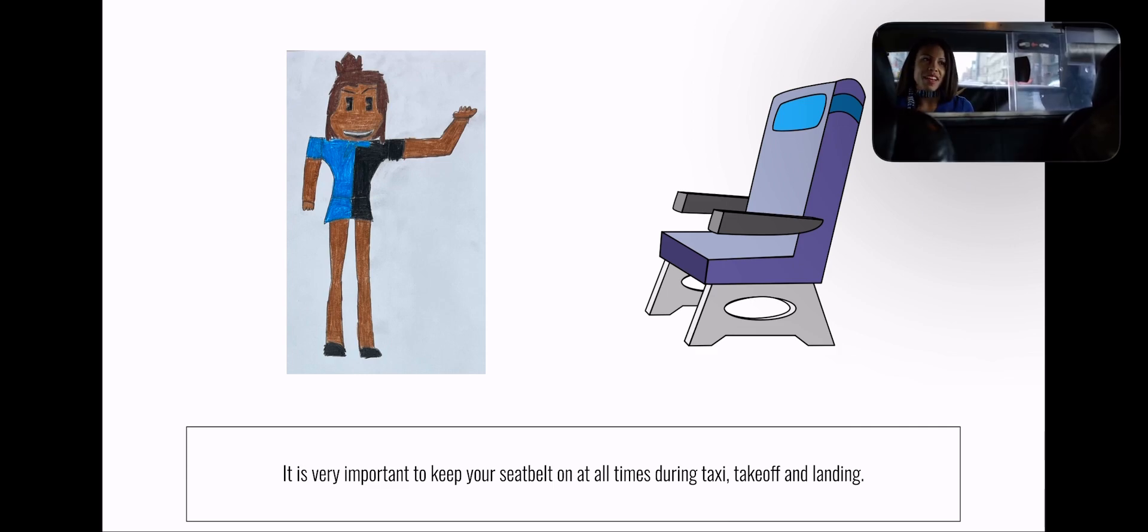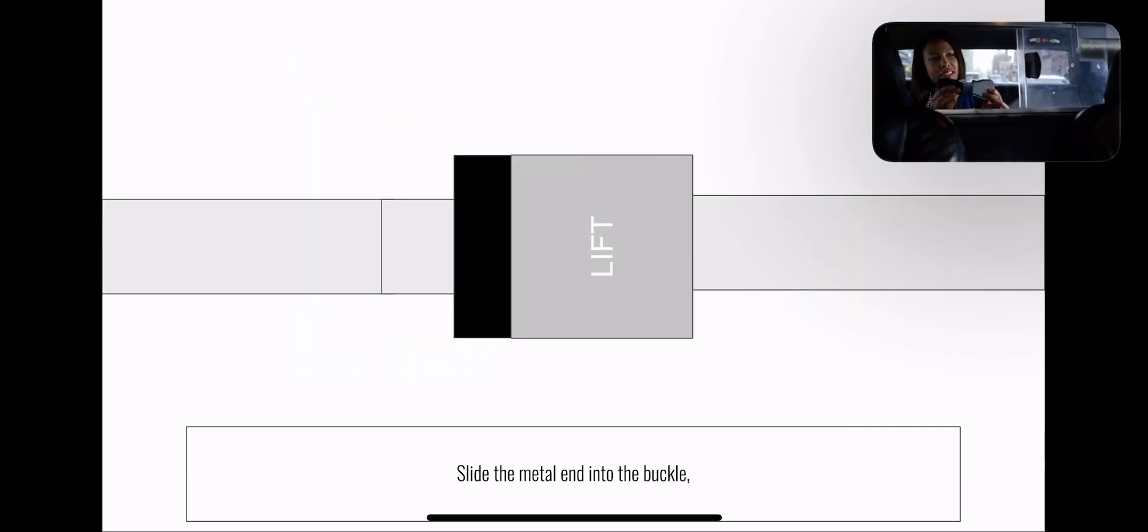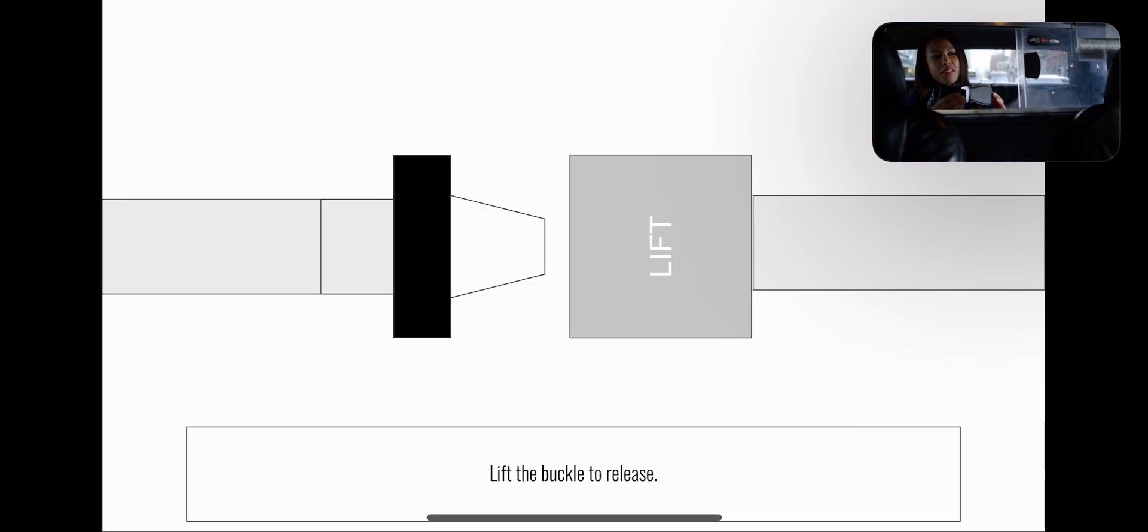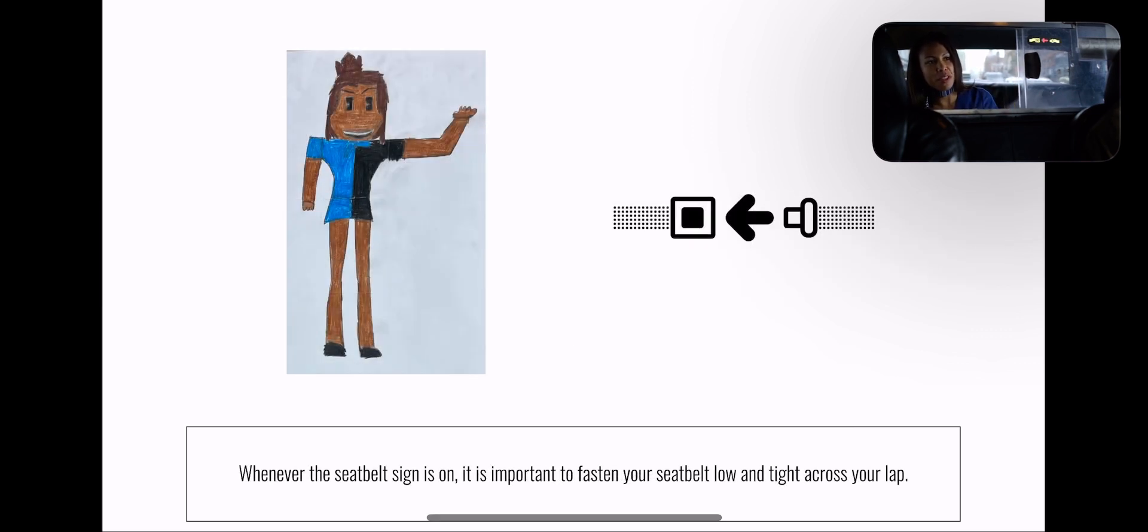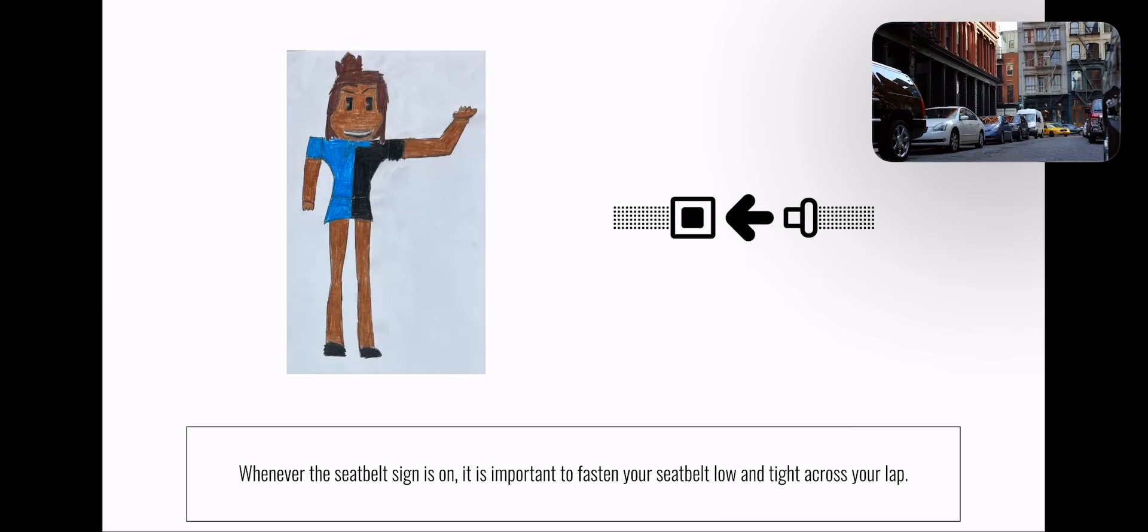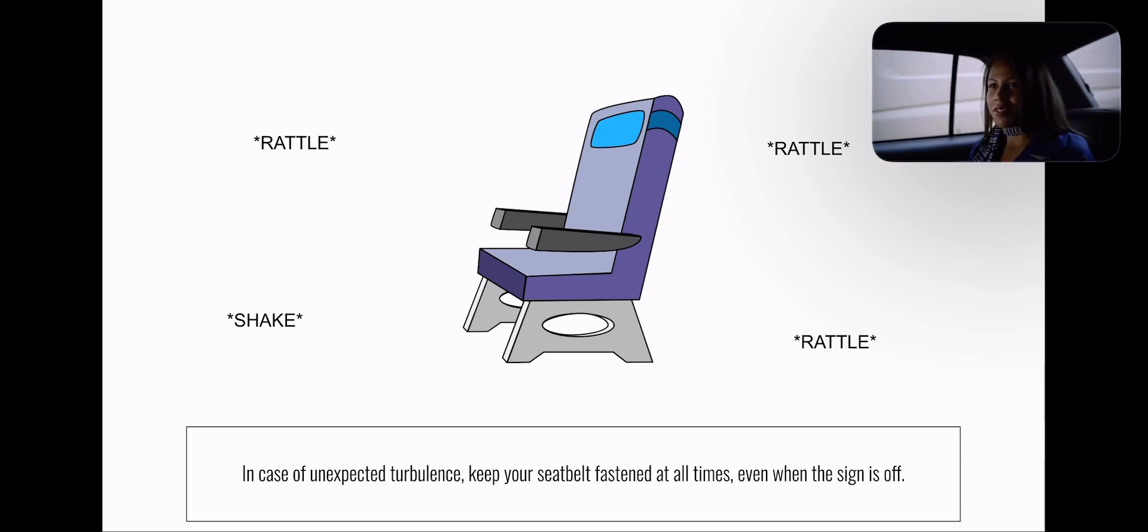You got it. It's important to have your seatbelt on at all times. To fasten your seatbelt, slide the metal end into the buckle. Tighten by pulling the loose end of the strap. Lift the buckle to release. When the seatbelt sign is on, your seatbelt should be fastened low and tight across your lap. In case of unexpected turbulence, keep your seatbelt fastened even when the seatbelt sign is off.